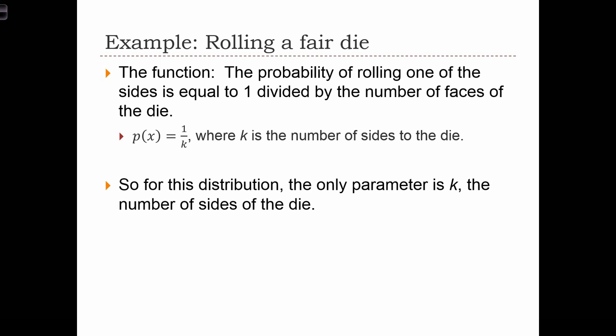So in the case of a regular die with six sides, the probability of obtaining each outcome is 1/6. And we have a probability distribution function that essentially looks like a box.